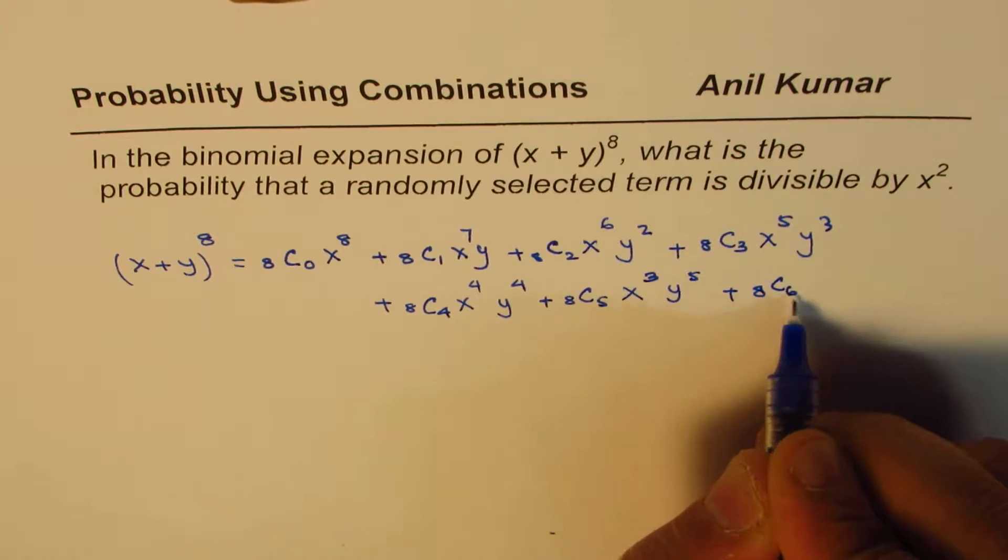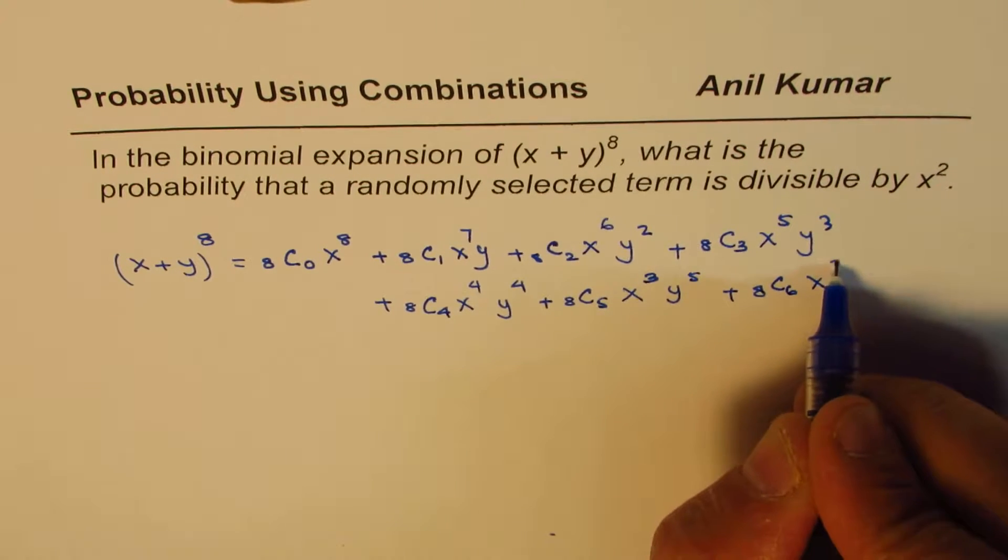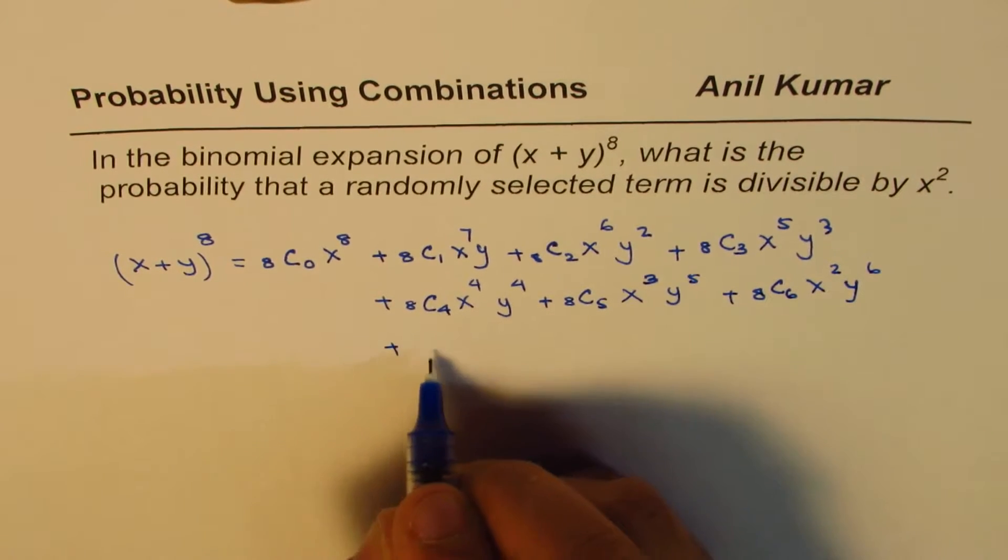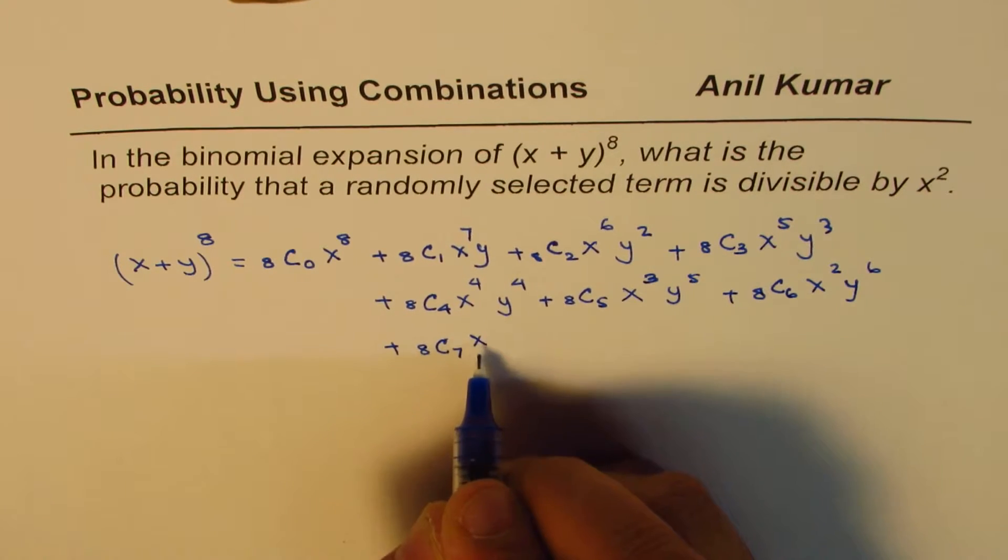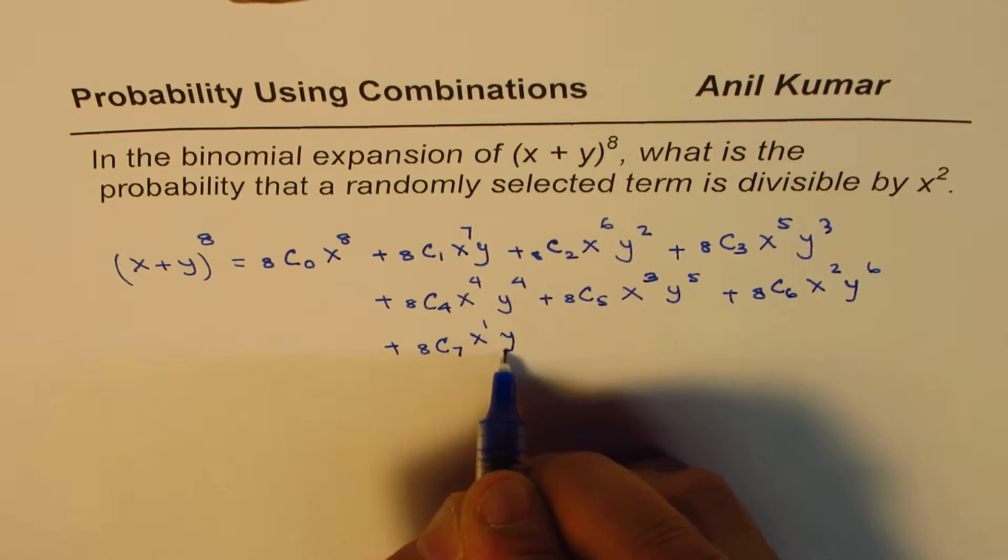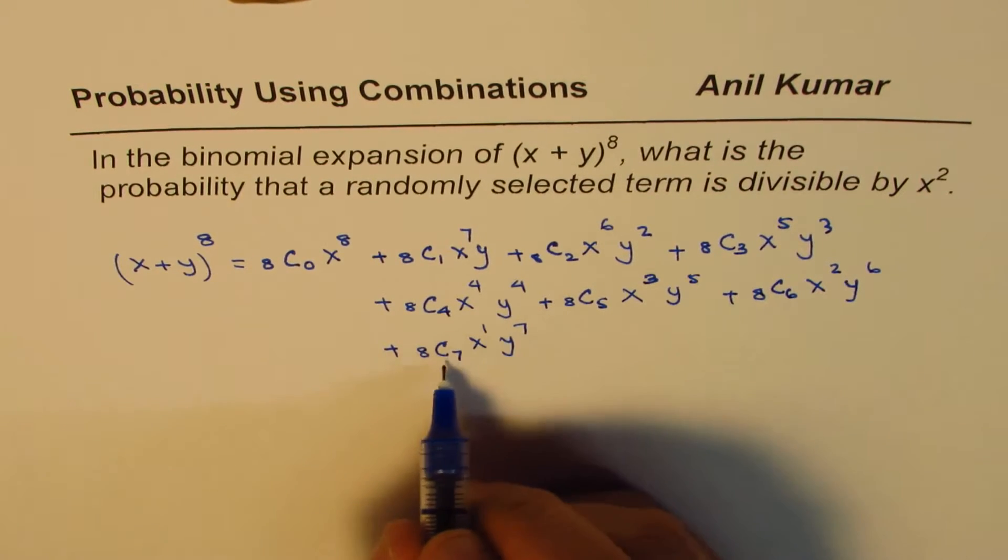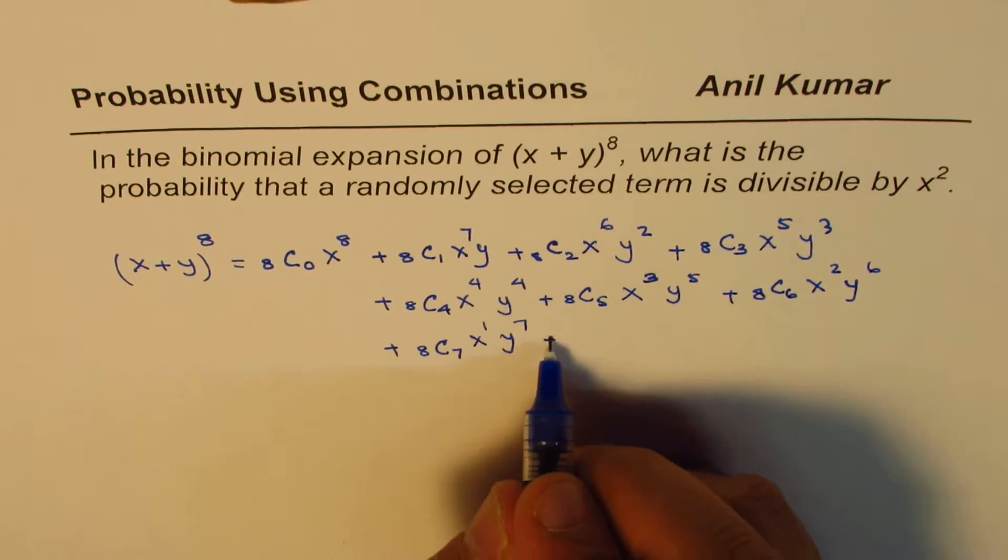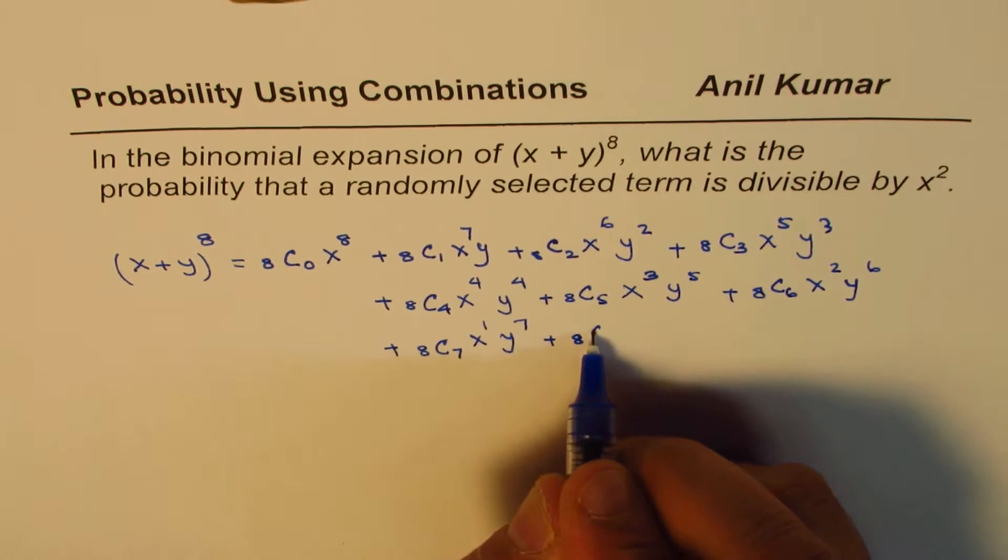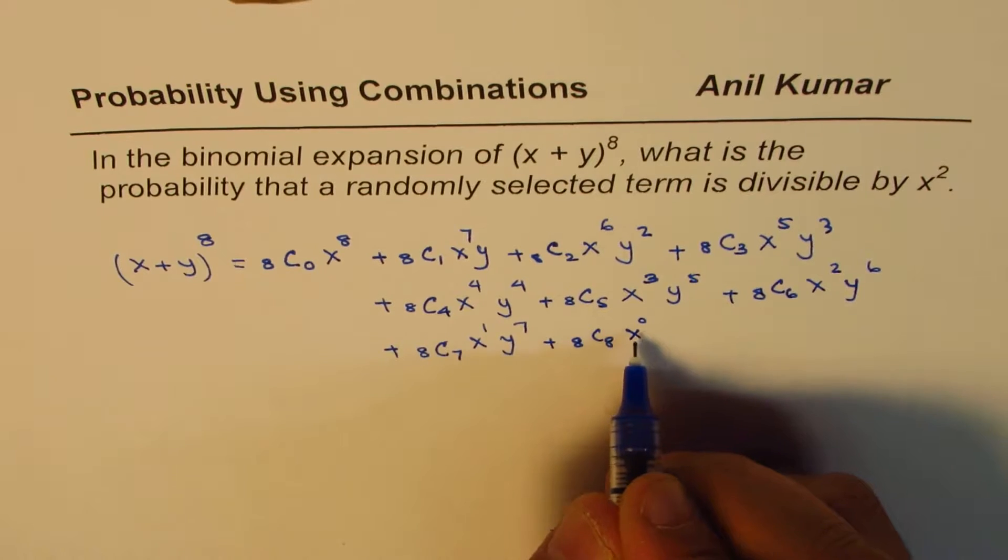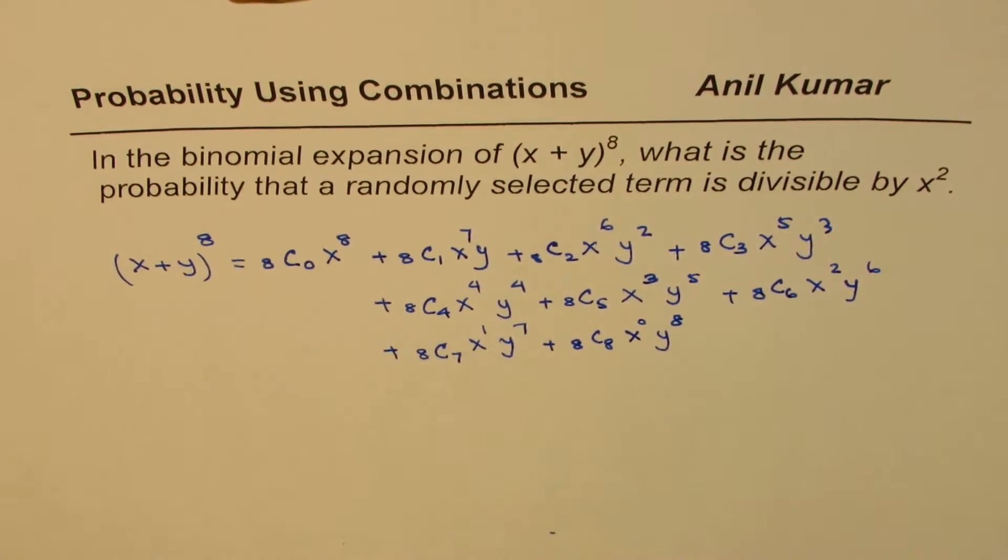x to the power of 2 y to the power of 6 plus 8c7 x to the power of 1 y to the power of 7. These exponents add up to 8 always. And then we have 8c8 x to the power of 0, y to the power of 8, basically it is 1.